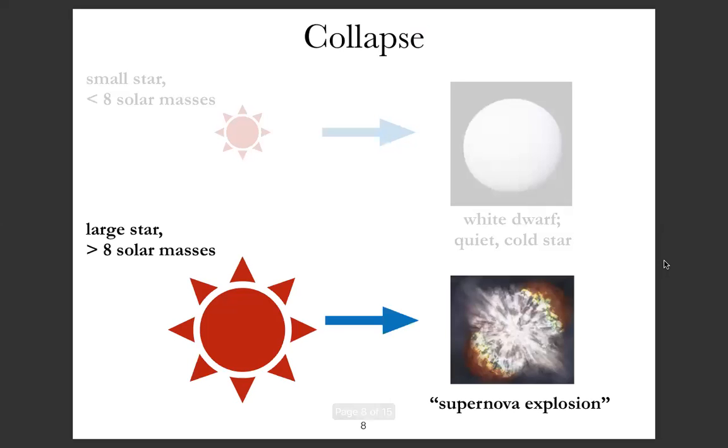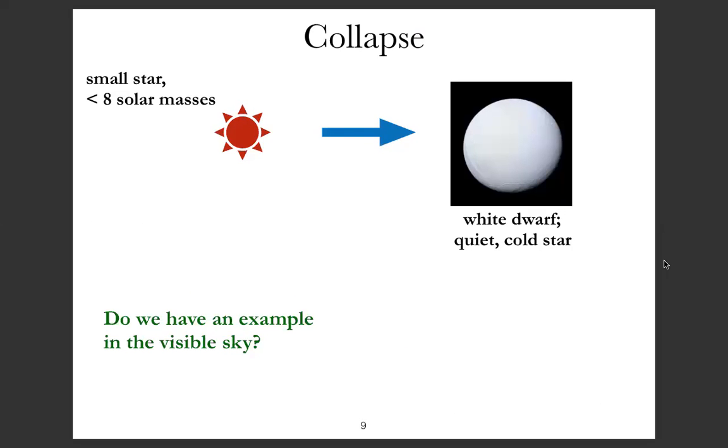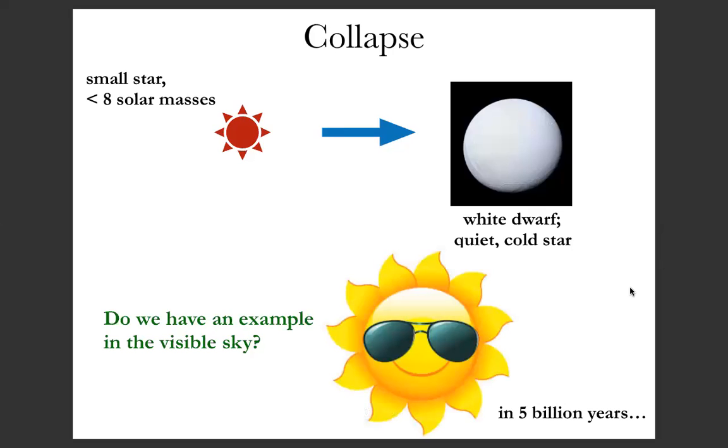But if the star happens to be greater than eight solar masses, it's so heavy that it can't help exploding violently. And this is what we call a supernova explosion. So small star—do we have an example in the visible sky? Can you guess what star in the sky you know of which has a mass less than eight solar masses? The Sun. Absolutely, exactly. Because the Sun by definition has one solar mass. And this is what's going to happen to the Sun in five billion years. Enough time to put in your nomination.